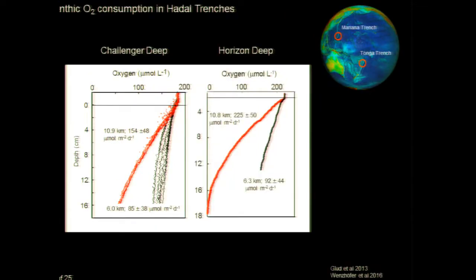The same pattern was found in the Tonga Trench, and it was even more extreme — in situ profiles at 10.8 kilometers showed much higher activity than the abyssal plain profiles. So the two deepest sites in the world apparently have intensified biological activity, intensified deposition, and intensified turnover of carbon.